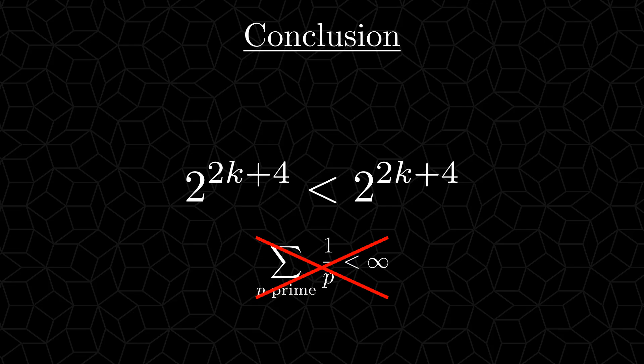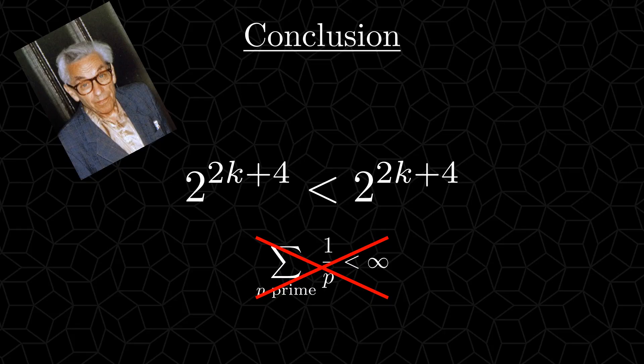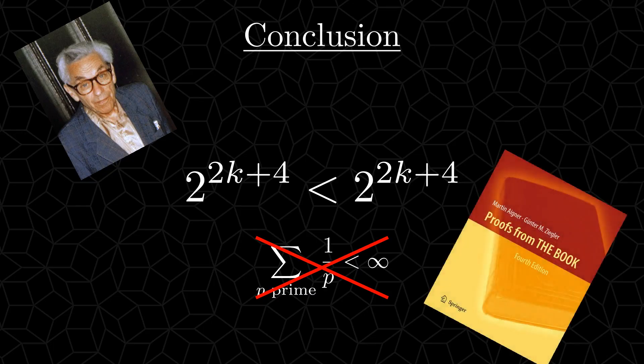This proof is due to the Hungarian mathematician Paul Erdős, and it is one of many elegant proofs by him and other mathematicians collected in the book Proofs from the Book. Which is a fascinating read for anyone interested in elegant mathematical proofs. I highly recommend giving it a try.